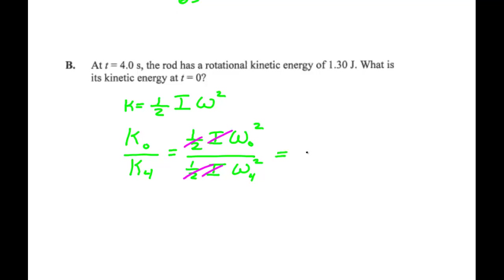So we find that the ratio of the speed at t equals 0 divided by its speed at t equals 4 seconds squared is the ratio of this kinetic energy. So the kinetic energy at t equals 0 is the speed at time 0 divided by the angular speed at time 4 seconds squared times the kinetic energy it had at time t equals 4.